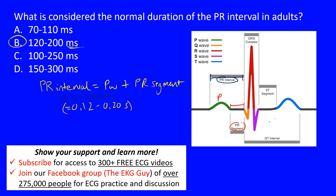This is important to keep in mind when we look at AV blocks. The duration of the PR interval can help differentiate whether we have a first-degree AV block. If it goes beyond 200 milliseconds, we start talking about AV blocks in adults. The normal duration is between 120 and 200 milliseconds.